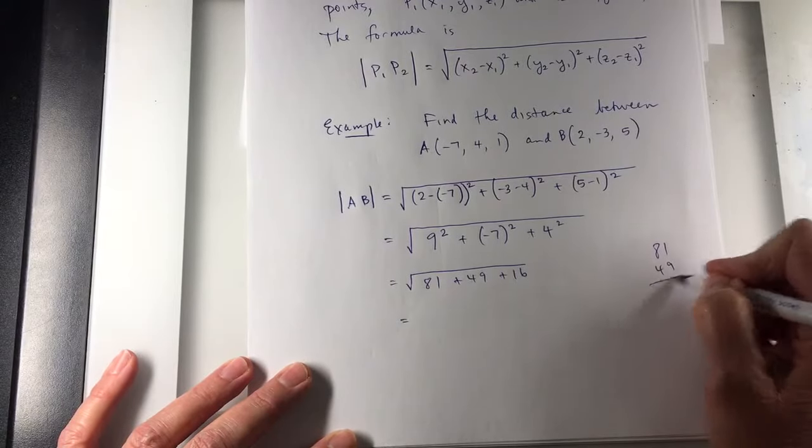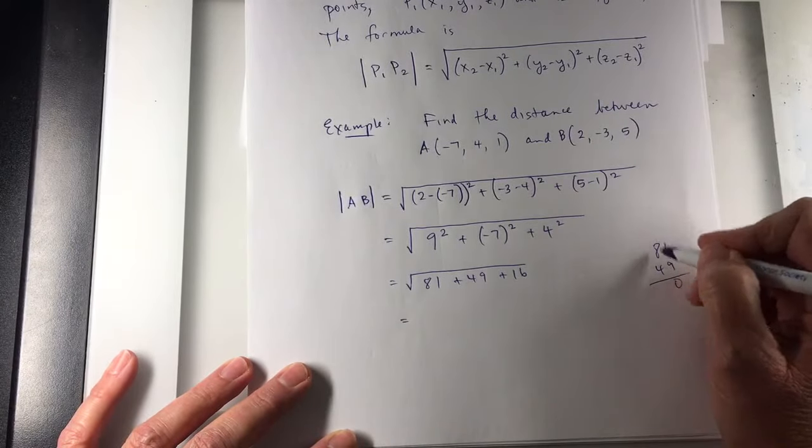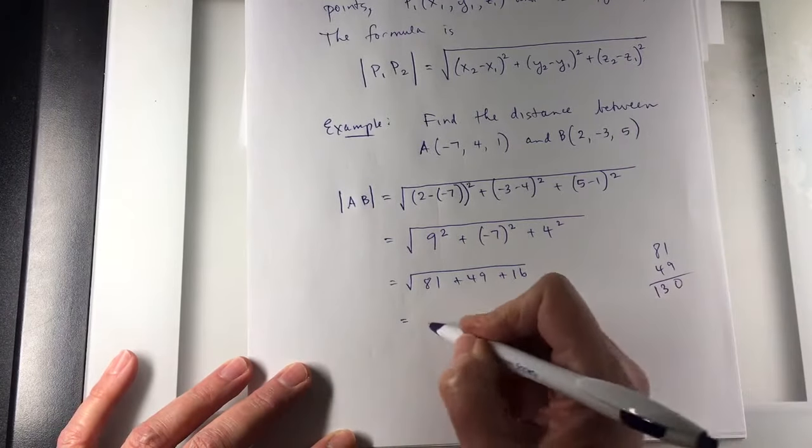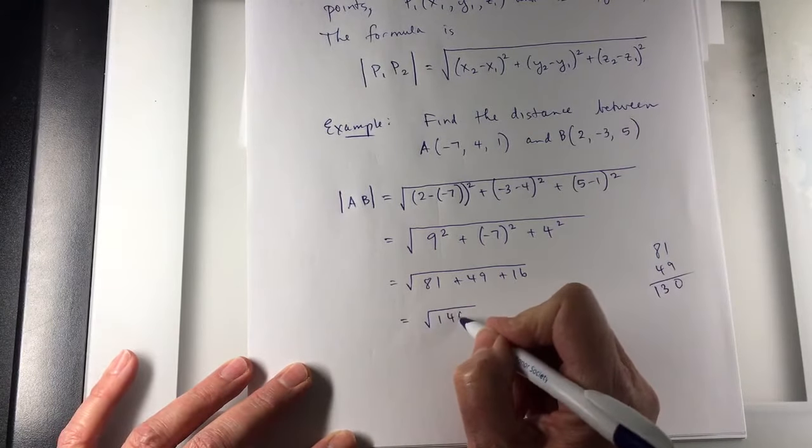Let's see, 81 and 49, 130 plus 16 will be the square root of 146.